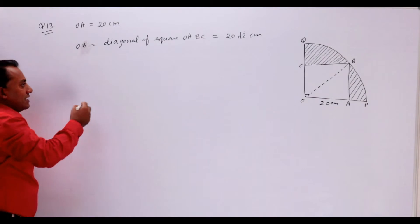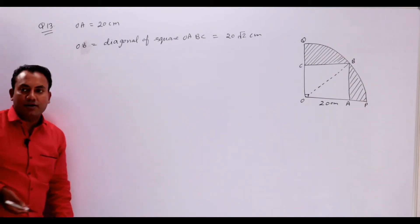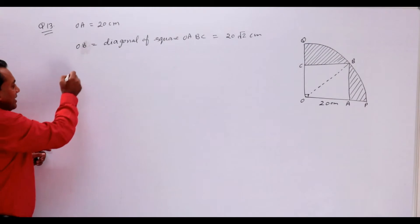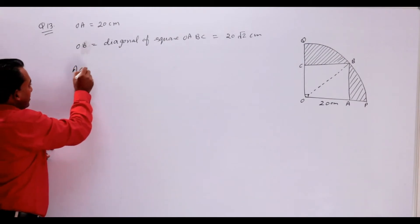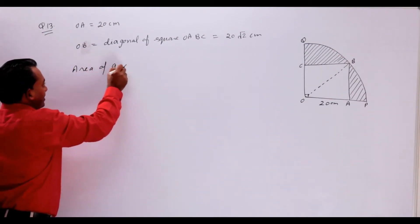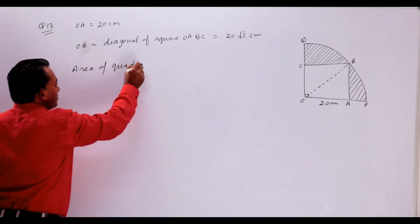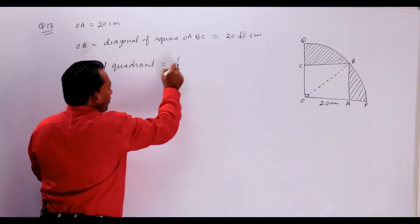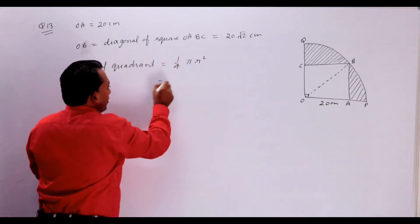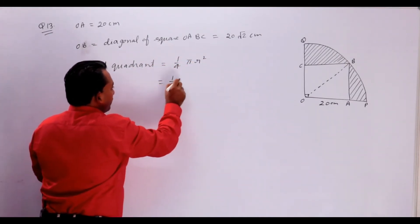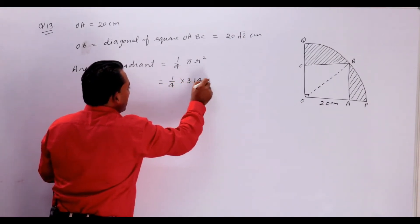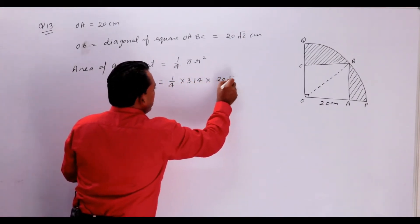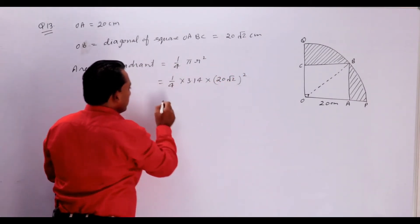Ab hum easily dono area nikal sakte hain — area of quadrant aur area of square. Toh pehle hum area of quadrant nikalte hain. Area of quadrant is equal to 1/4 × pi × r² = 1/4 × 3.14 × (20 root 2)² whole power 2.